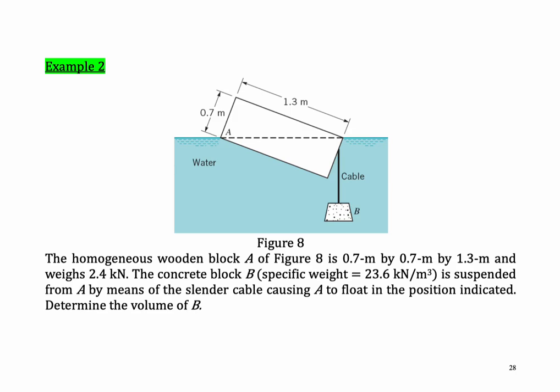Tutorial 2: The homogeneous wooden block A is 0.5 meter by 0.5 meter by 1.3 meter and weighs 2.4 kilonewton. The concrete block B has a specific weight of 23.6 kilonewton per meter cube and is suspended from A by means of a slender cable, causing A to float in the position indicated. Determine the volume of B.